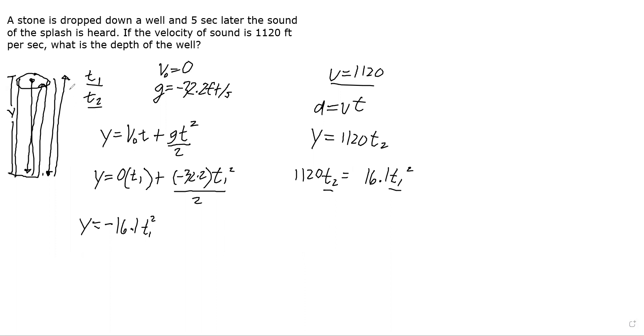Now we have two variables, we can't solve this yet. What else is given? It says 5 seconds for the drop and the return of the sound, so we have t₁ plus t₂ equals 5. Let's solve for t₂: t₂ equals 5 minus t₁. Then substitute this t₂ into our equation.